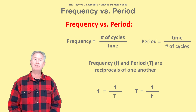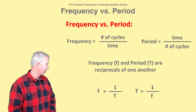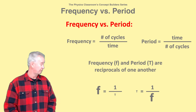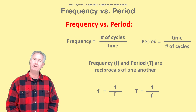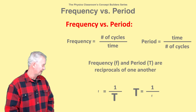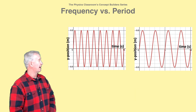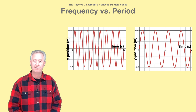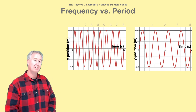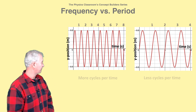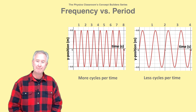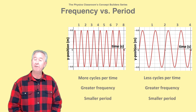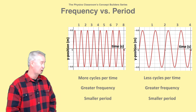If you know the frequency value, you can calculate the period value quite easily, and vice versa. As the frequency gets larger, the period gets smaller, and vice versa. These two graphs represent the position of a vibrating particle as a function of time. The graph on the left has a greater number of cycles in the same amount of time as the graph on the right. For this reason, it has the greater frequency and the smaller period.